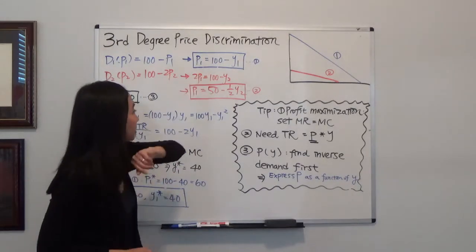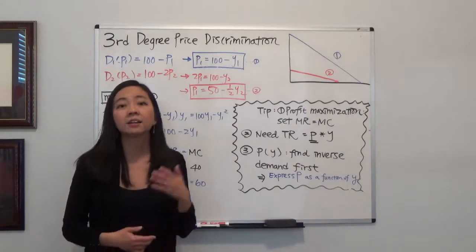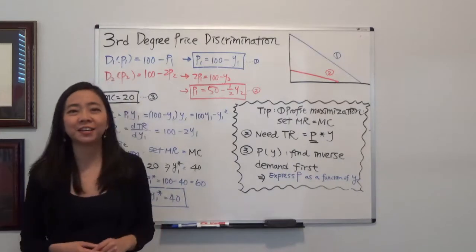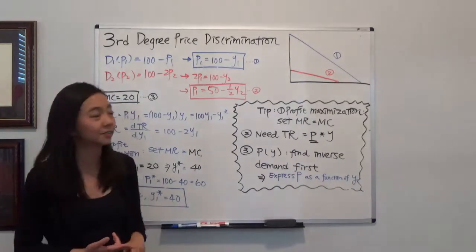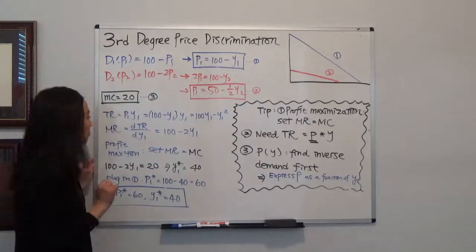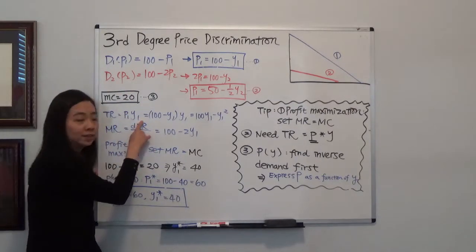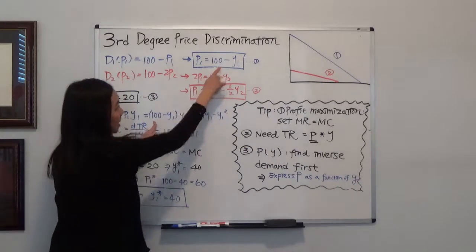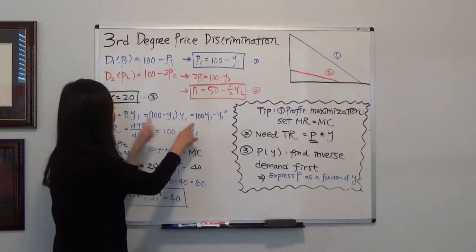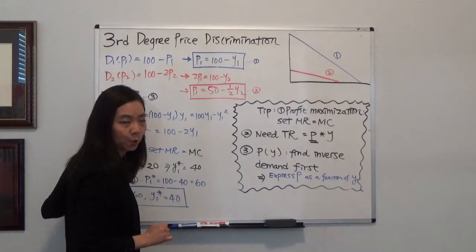After finding the inverse demand function, we find total revenue from the first market. Total revenue equals price times quantity. Price is equal to 100 minus y1, so total revenue is P1 times y1, which is (100 minus y1) times y1. That gives total revenue equal to 100y1 minus y1 squared.